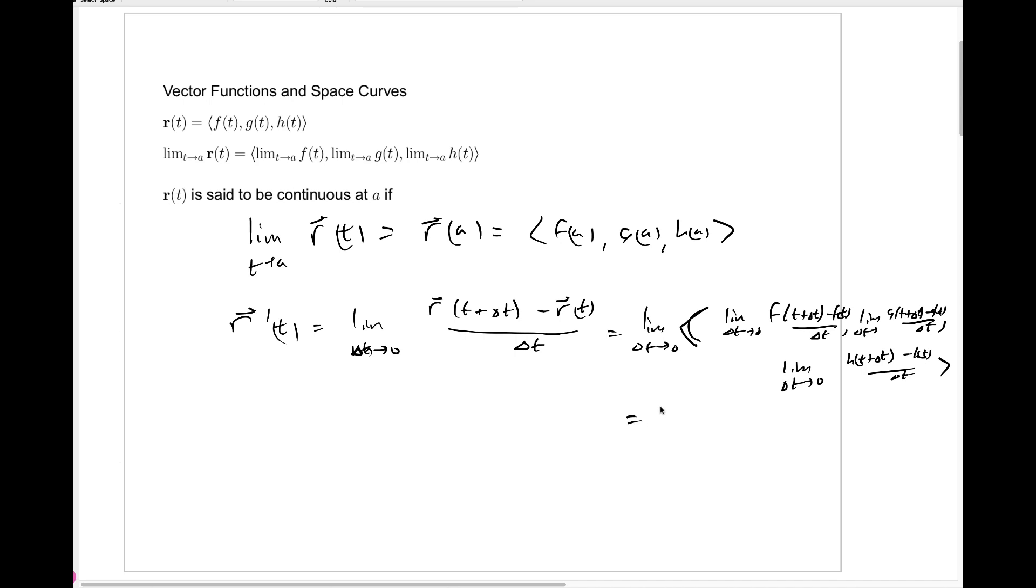And then when you evaluate each of these limits, you'll get exactly f prime of t, g prime of t, and h prime of t. So the end result is we can differentiate a vector function just by differentiating each component. As I mentioned, we'll be doing more about this in the next section. What I'd like to do now is just show you some examples of some vector functions whose graphs provide interesting curves in three-dimensional space.